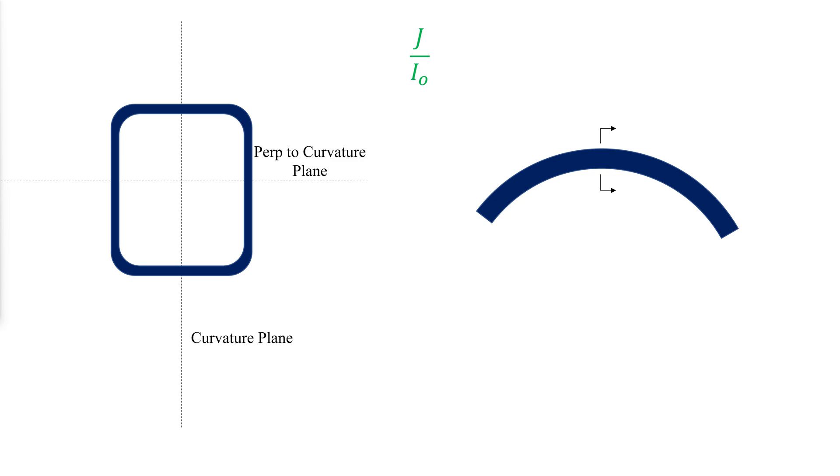For hollow steel section shapes with theta_B less than or equal to 45 degrees, or HB over LSB less than or equal to 0.1, a conservative value for the effective length factor is K_O equals 1.3.